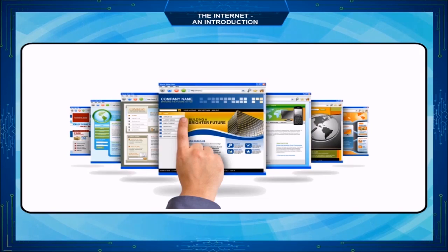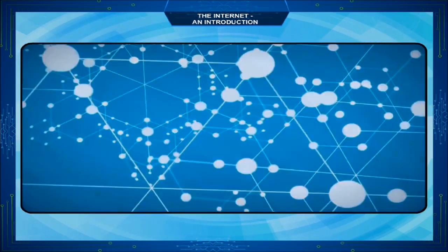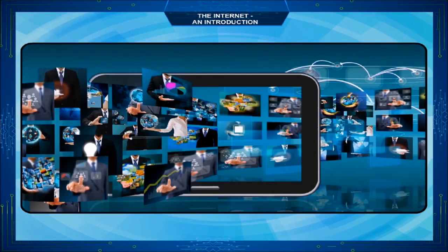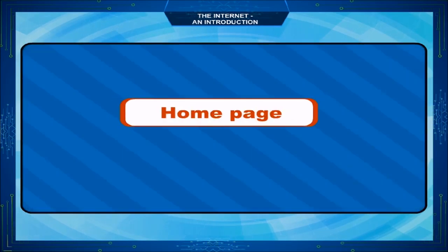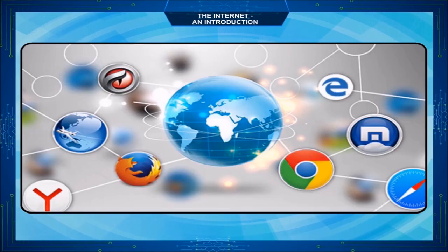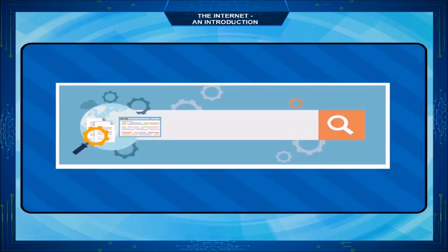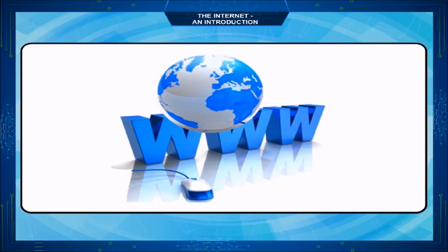A web page is any page on the internet that contains information in the form of text, graphics, video, etc. A home page is the first page of any website. A search engine is a software system designed to search for information on the World Wide Web.